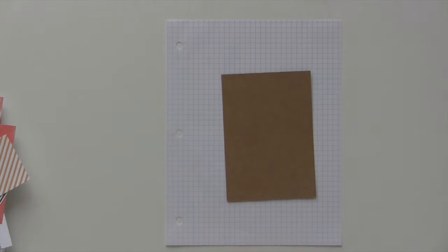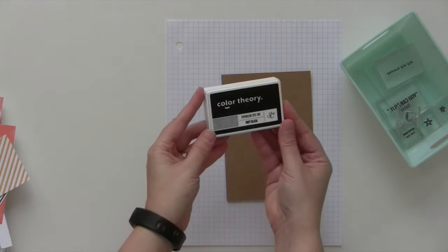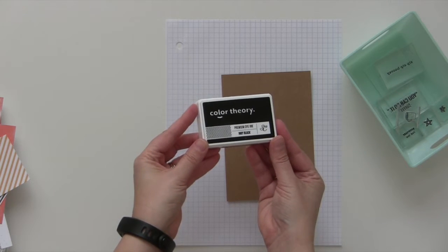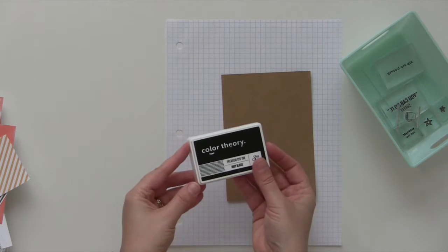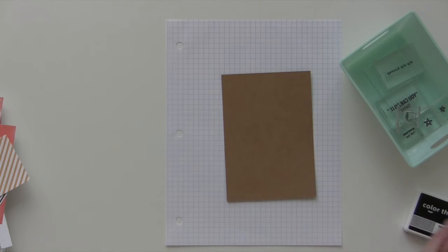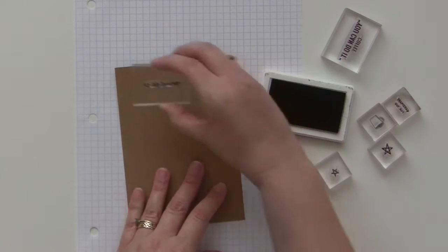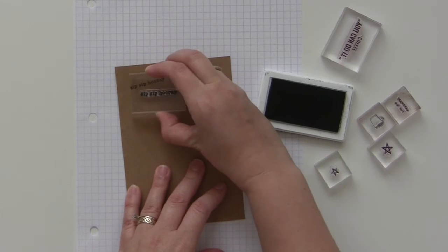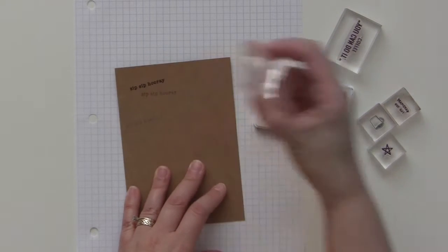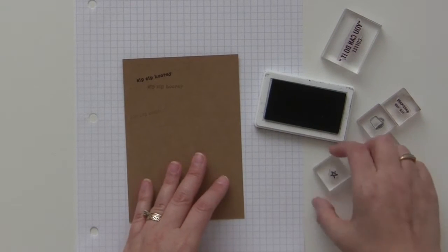All you have to do to get the same look is grab your stamps and some black ink. I'm using the Color Theory Inky Black. I like to start stamping in the upper left corner—I don't know why I always do that. The only trick is to keep stamping without re-inking.